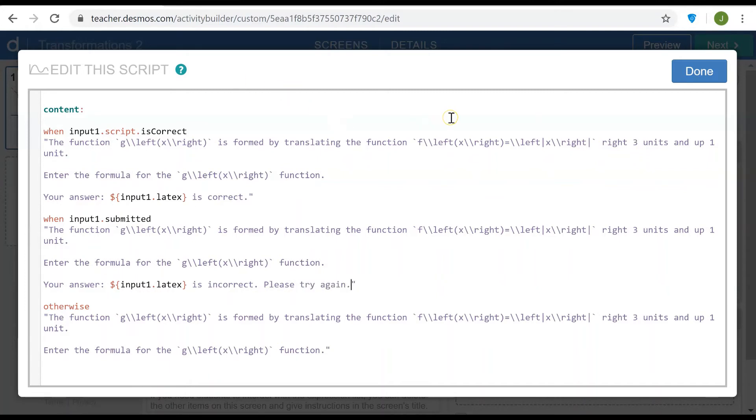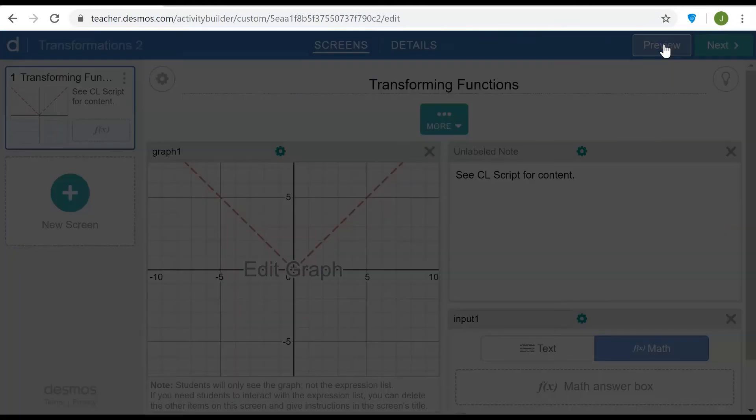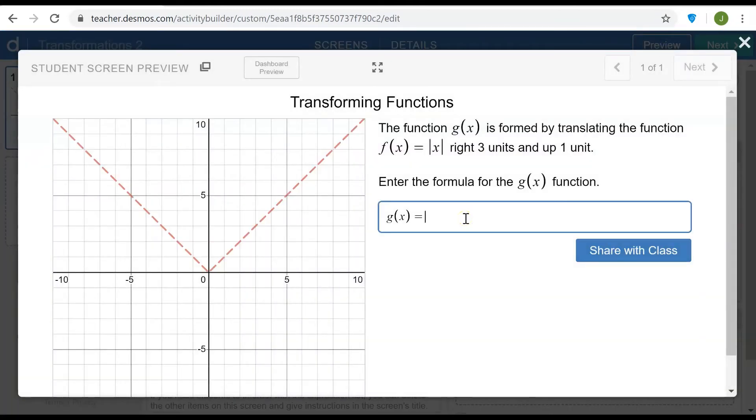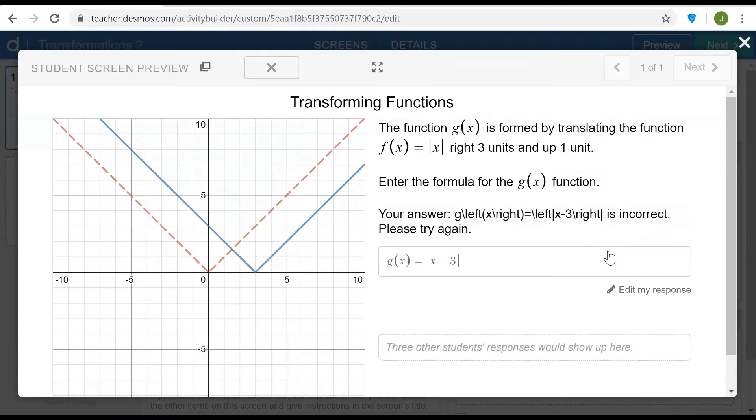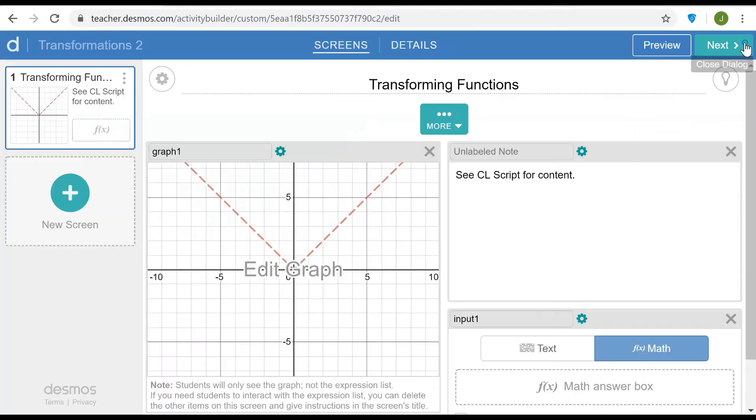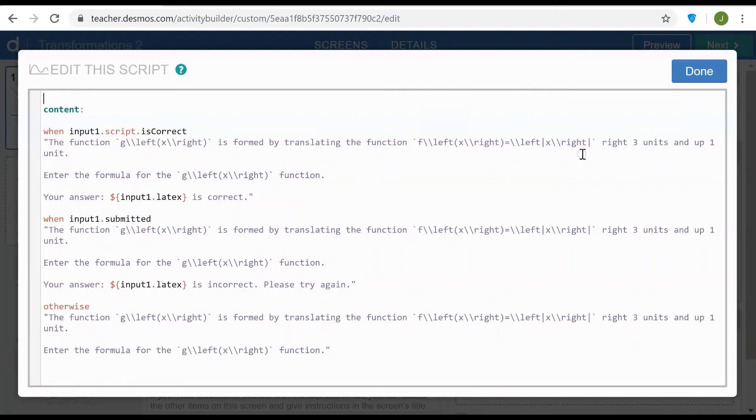So let's take a look at the activity now. So if I go to the preview and type in the absolute value of x minus 3 and hit enter or share with class, I see that I missed something and this is actually pretty good to notice. I didn't add a little tick mark that generates the LaTeX format.